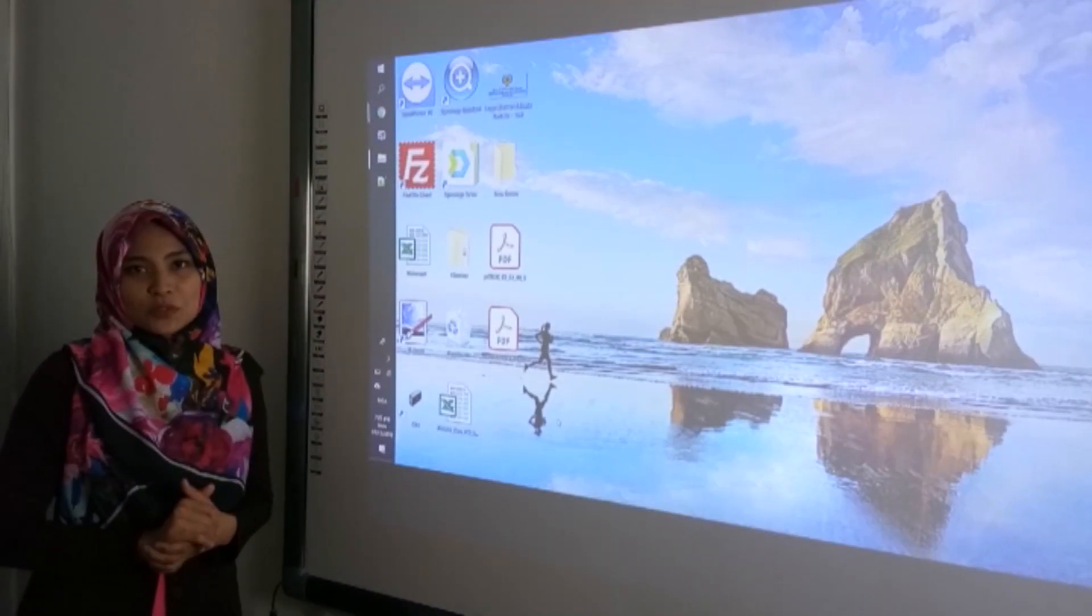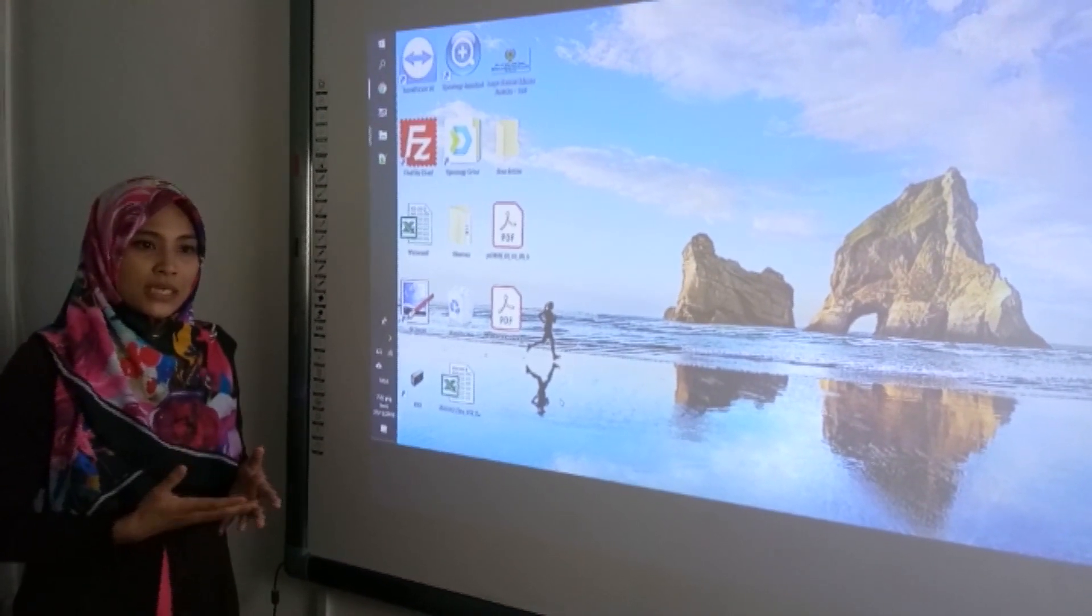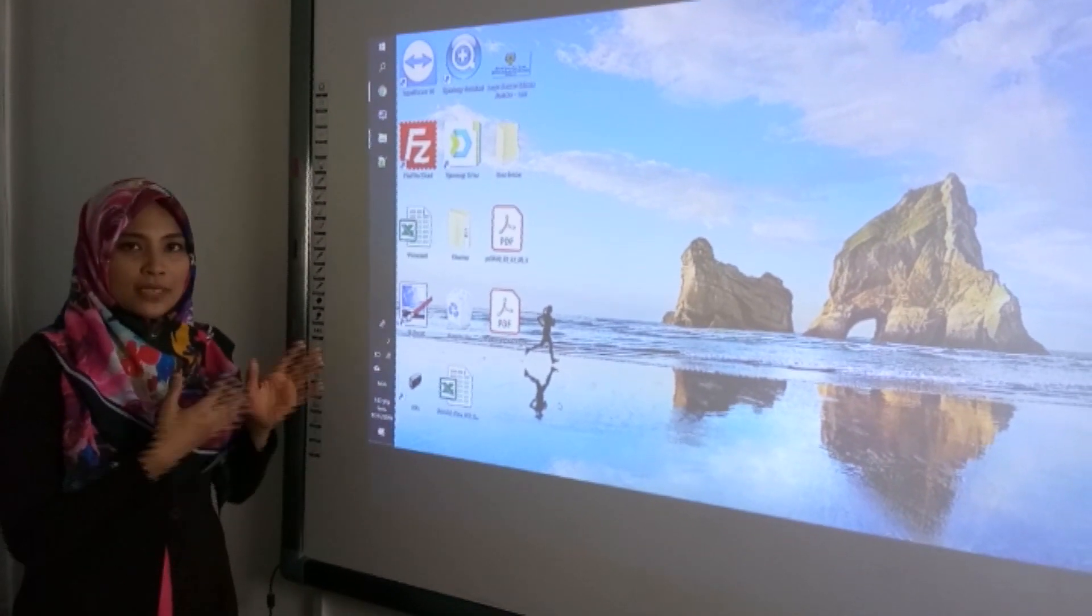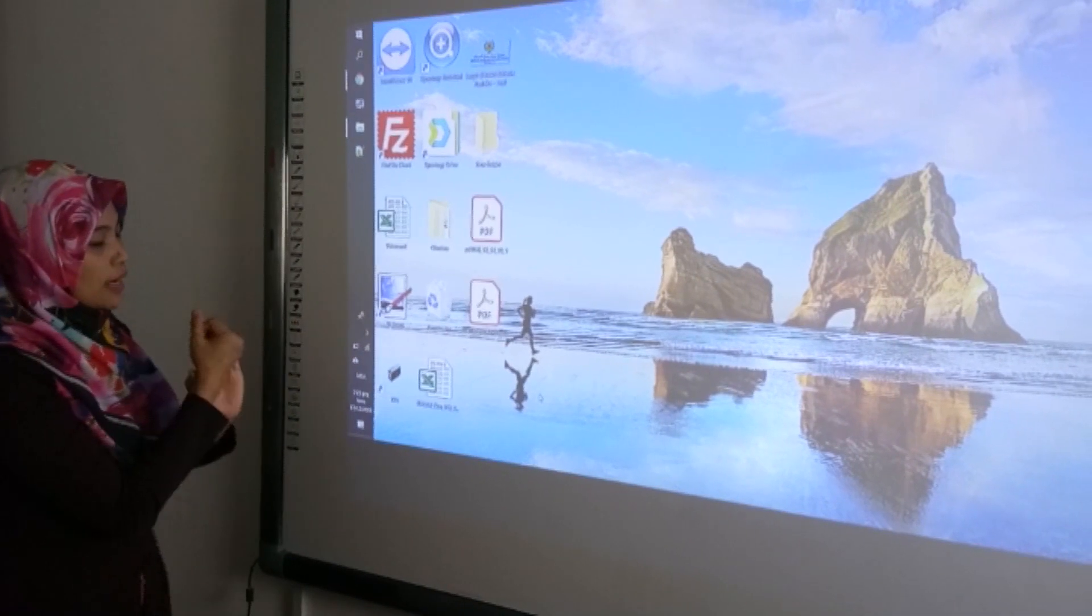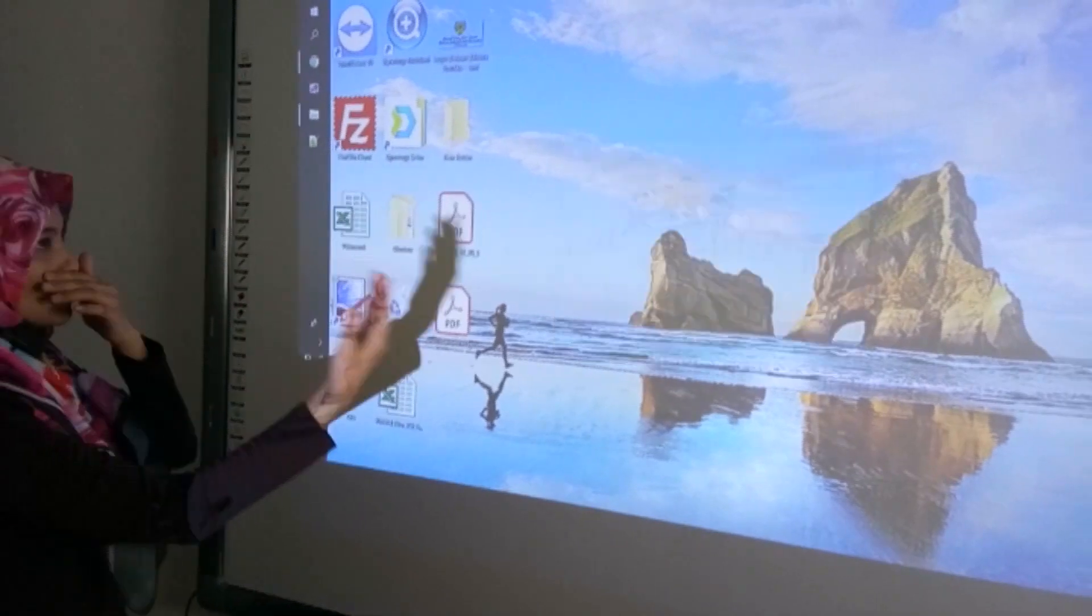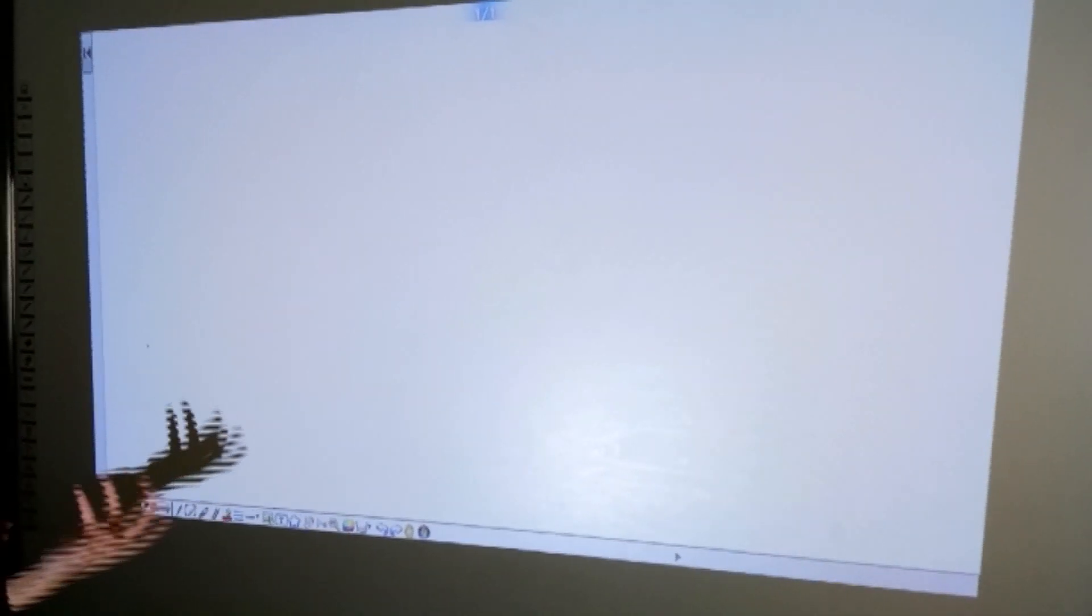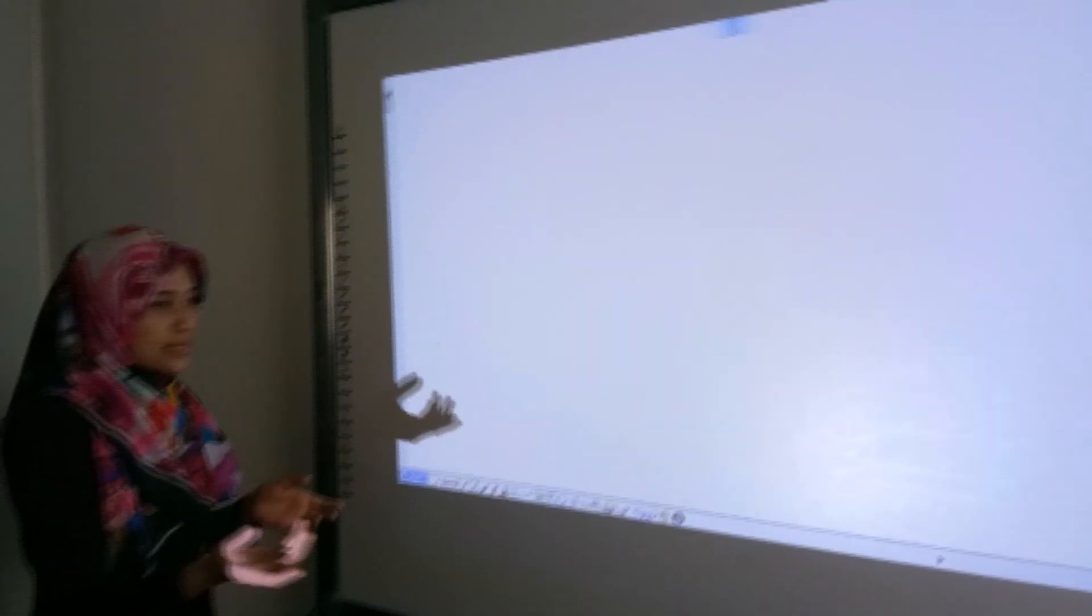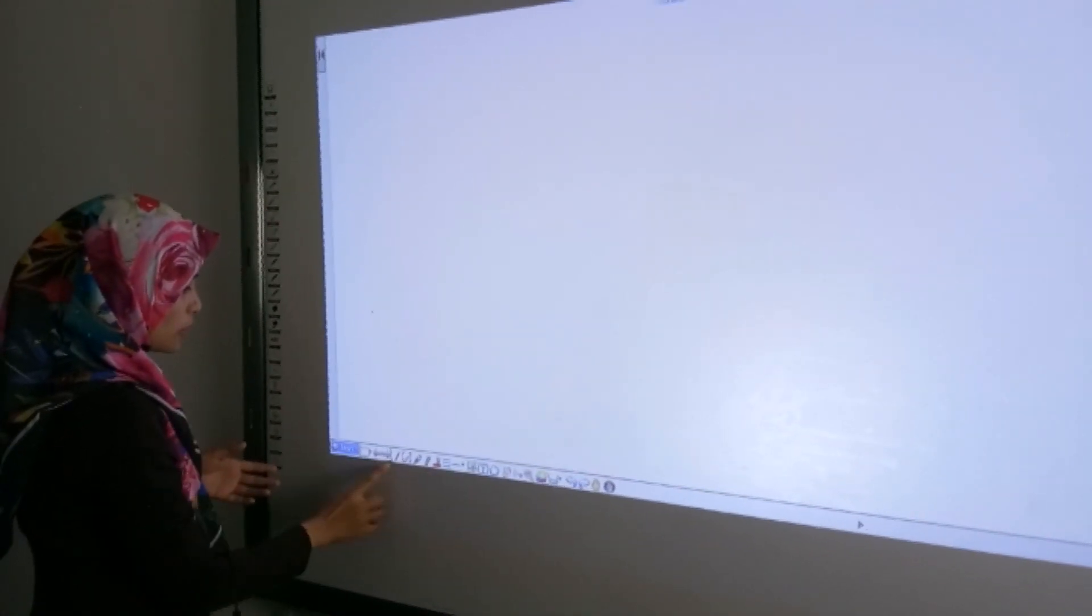Saya akan tunjukkan bagaimana cara untuk menggunakan interaktif whiteboard software. Software ni disediakan percuma. Waktu kita install, memang dah ada software ni. Just double click dekat ikon software GLboard. Dia akan keluar satu papanan putih untuk menulis, untuk melukis. Guru-guru boleh menggunakan dalam pembelajaran di dalam kelas. Saya tunjukkan dia ada beberapa function dekat bawah ni. Function ni semua dekat bawah.